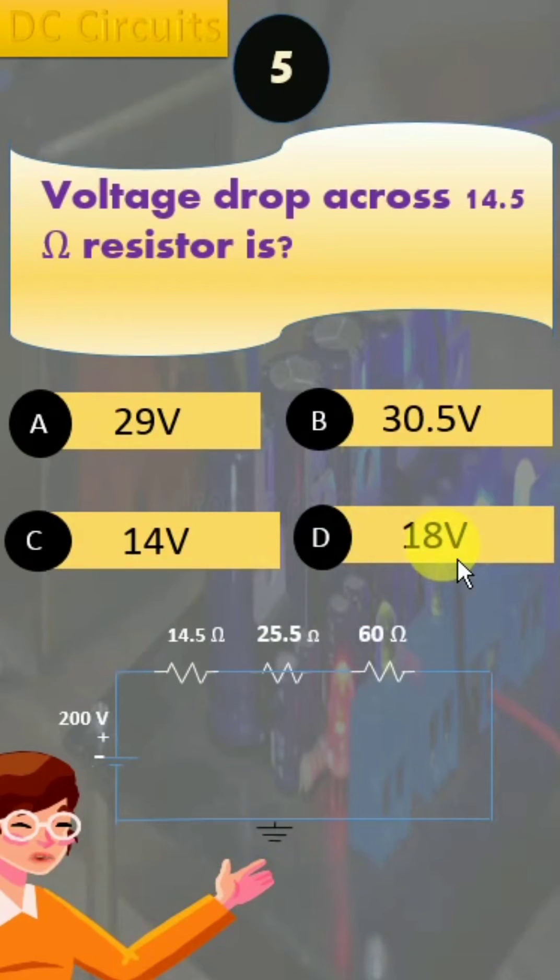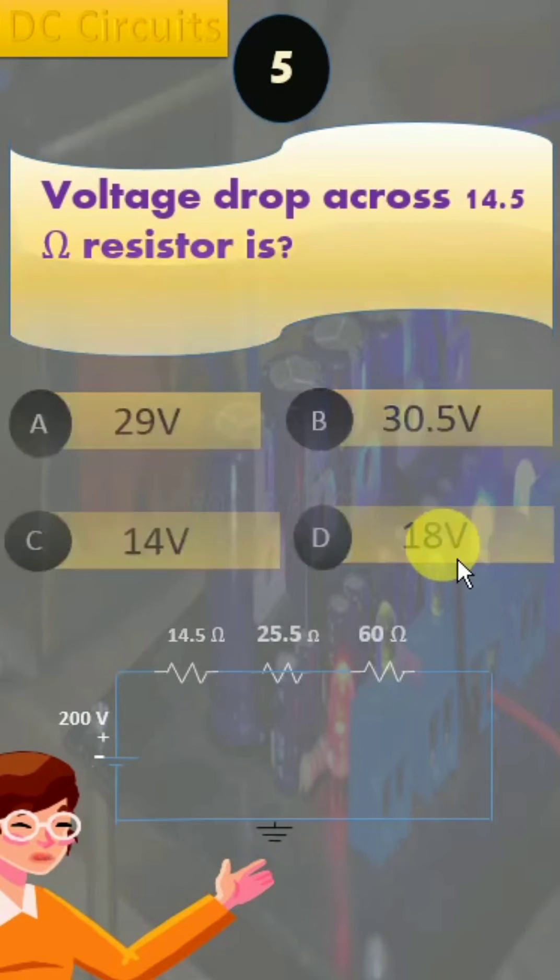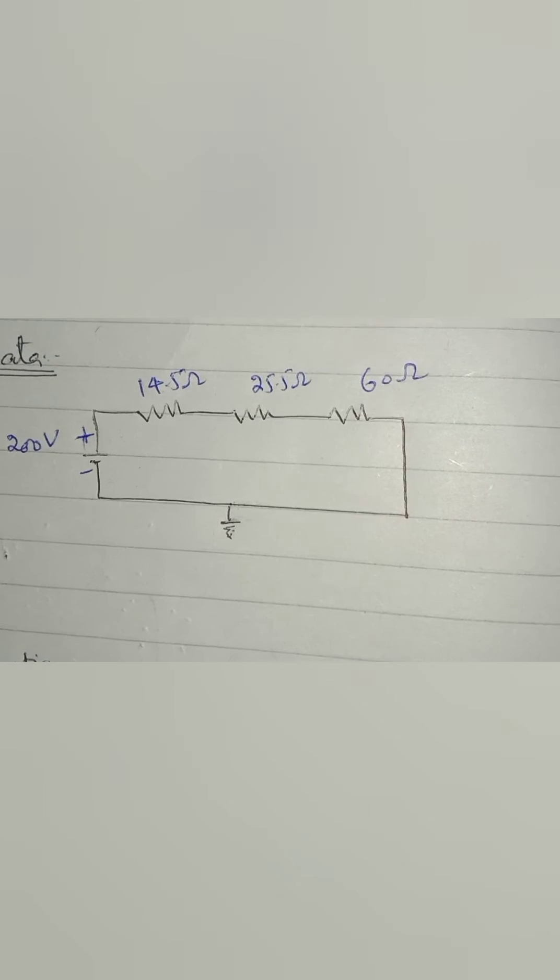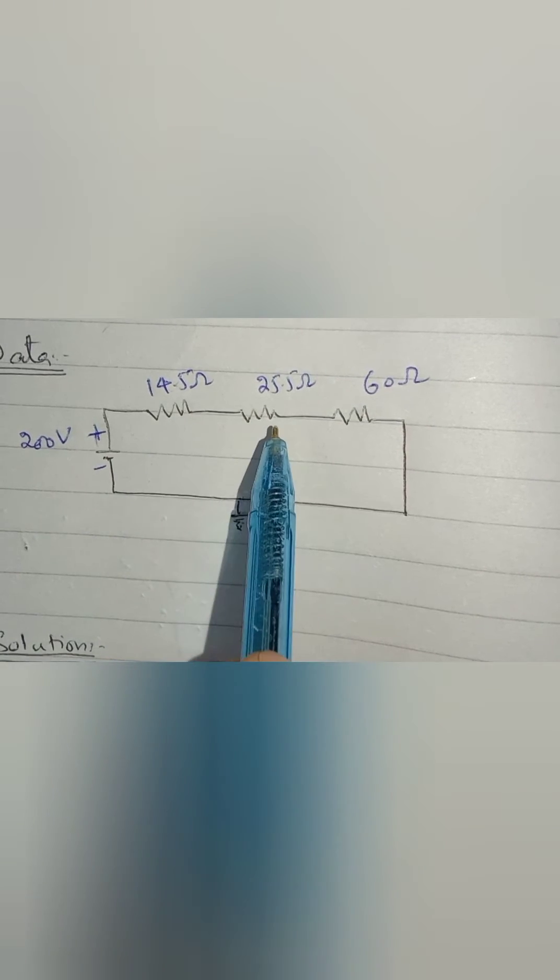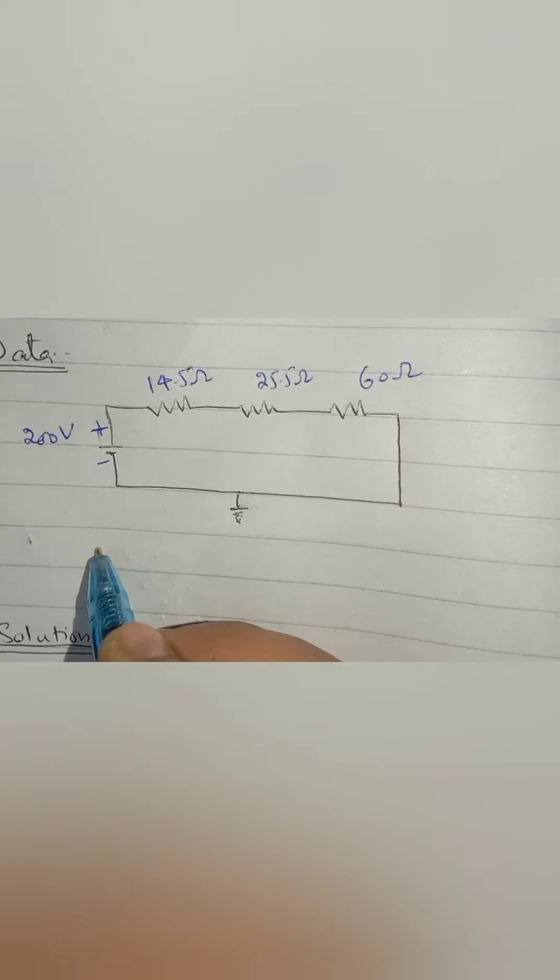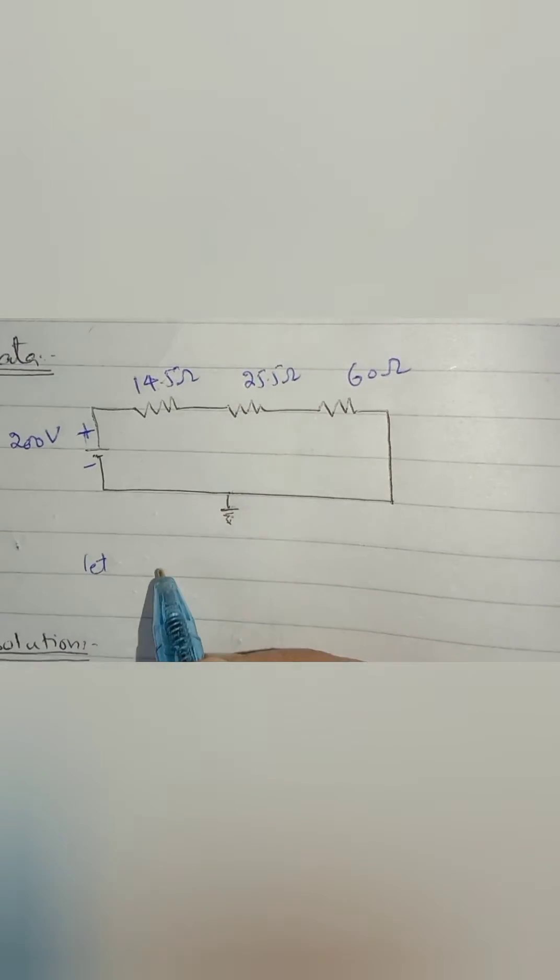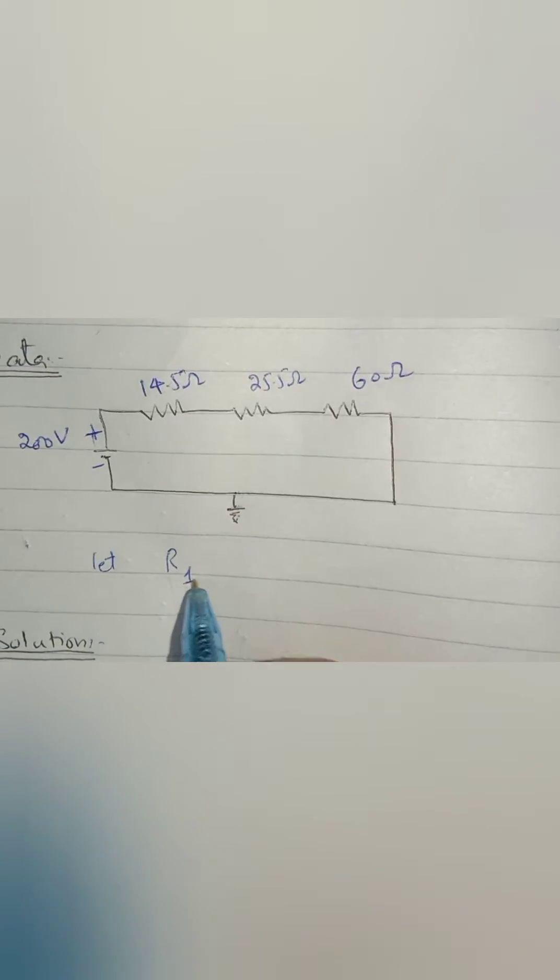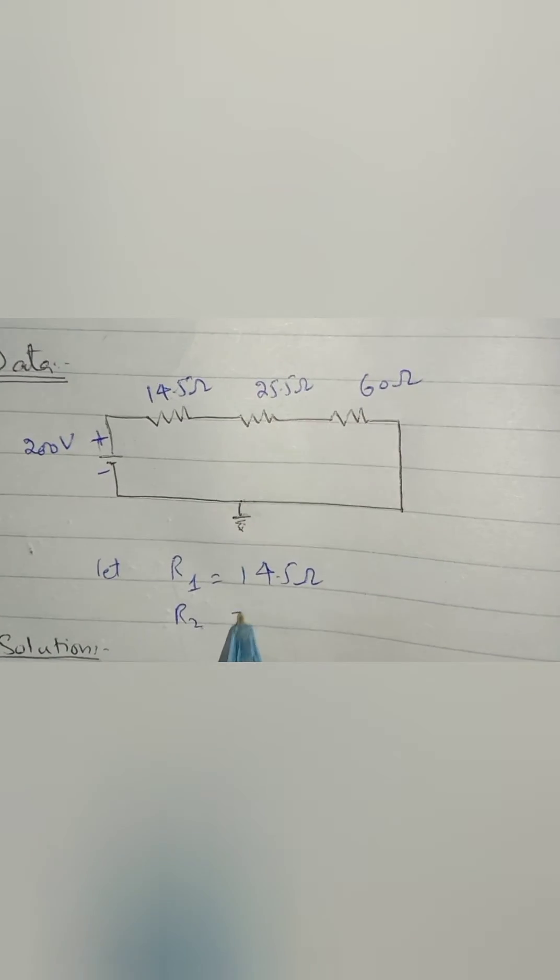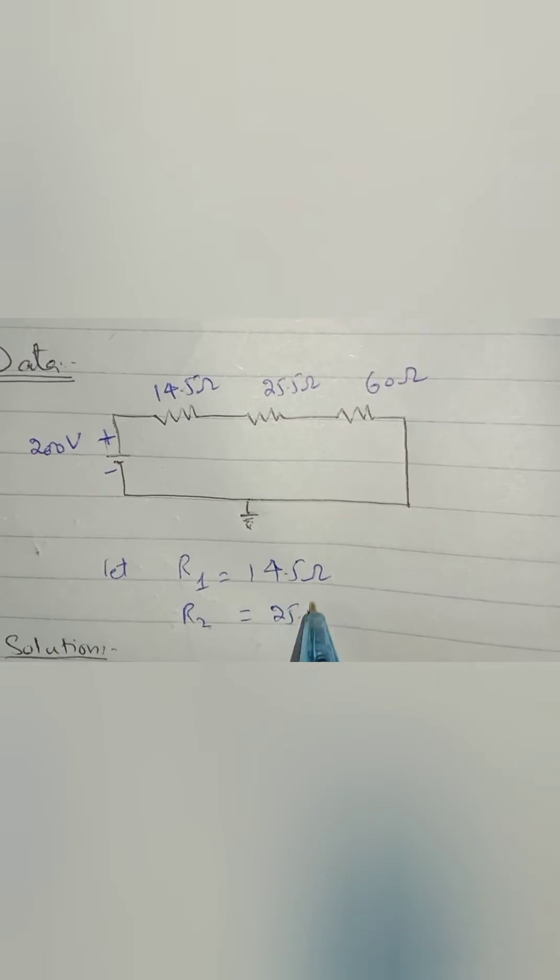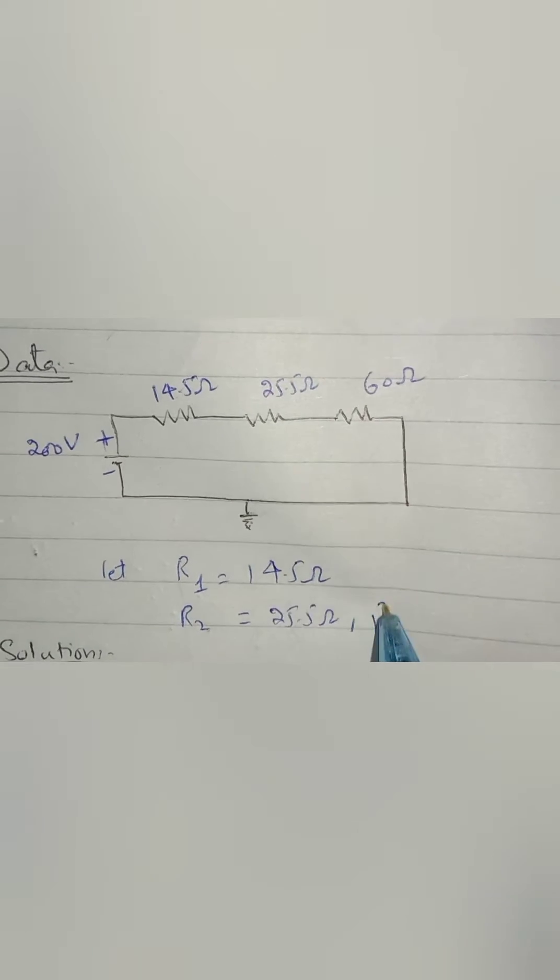We have voltage equals to 200 volts and resistances of 14.5 ohm, 25.5 ohm, and 60 ohms. Let us say R1 is 14.5 ohm, R2 is 25.5 ohm, and R3 is 60 ohm. We have named these for our own convenience.